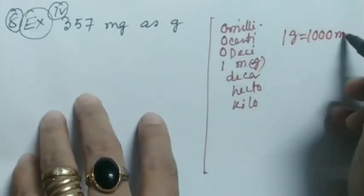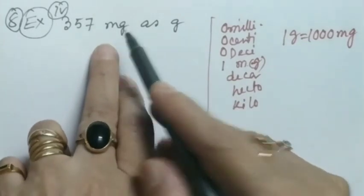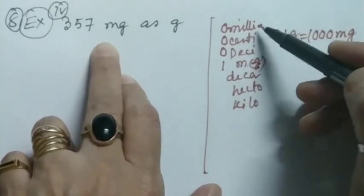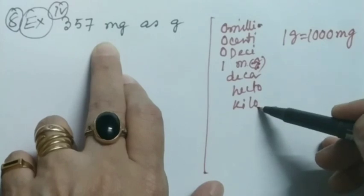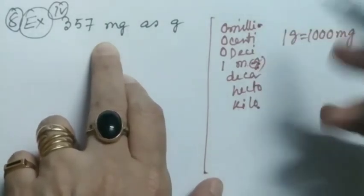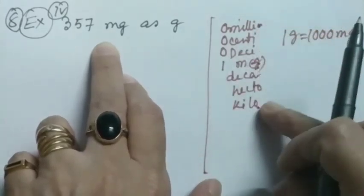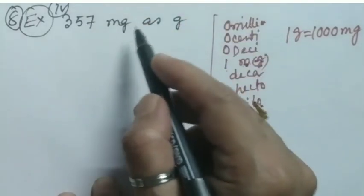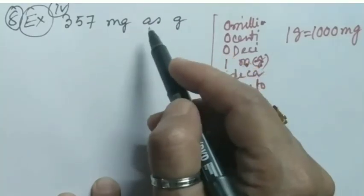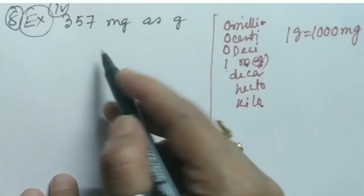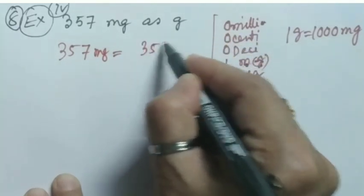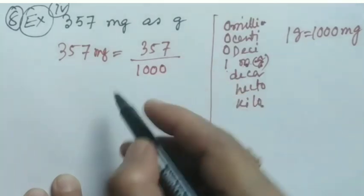So our relation is 1 gram equals 1000 milligrams. We have got our relation, and now you see milligram is smaller than gram because I already told you milli is the smallest unit and kilo is the largest one, so gradually in ascending order it goes. We have found our relation: 1 gram equals 1000 milligrams. Here we are converting small to big, so we will use division.